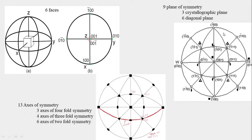There are 13 axes of symmetry: three axes of 4-fold symmetry, which are the crystallographic axes; four axes of 3-fold symmetry; and six axes of 2-fold symmetry.